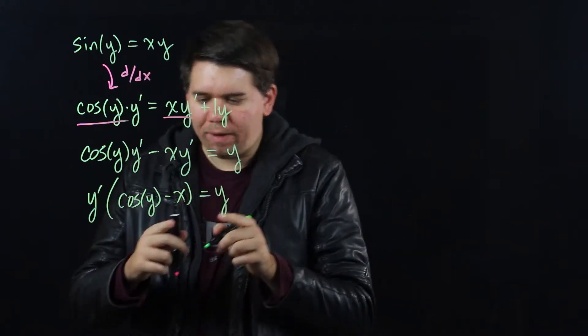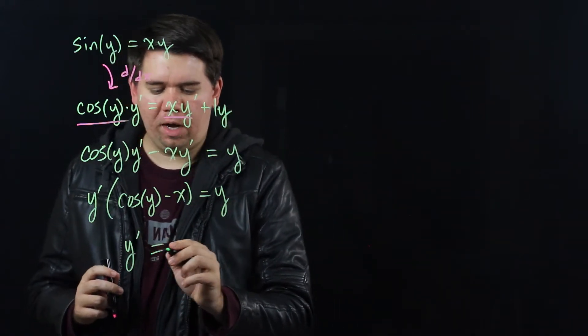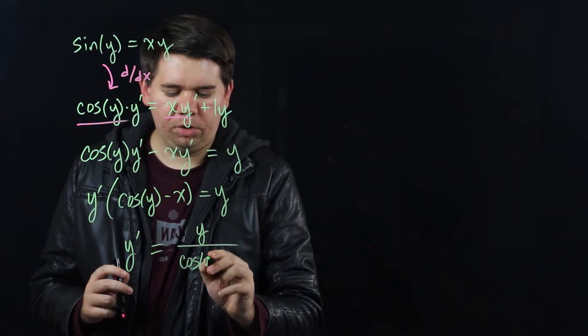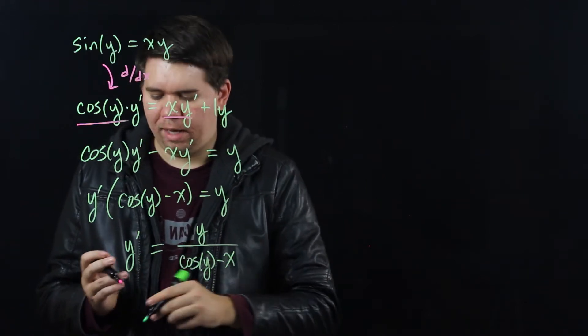And then you can divide by that term to get what y prime is. Y prime is just y divided by cosine of y minus x.